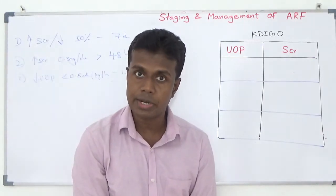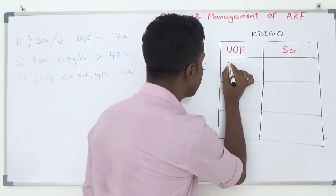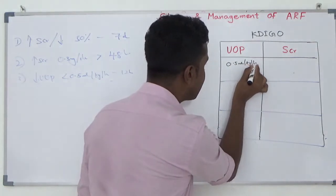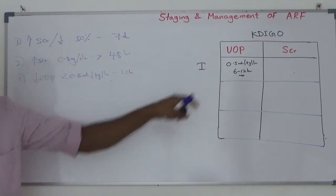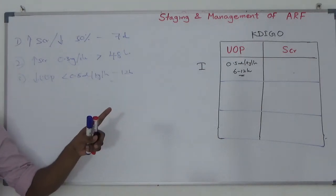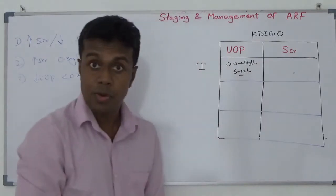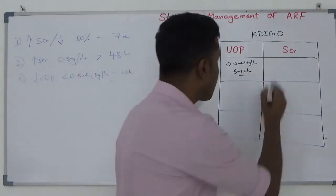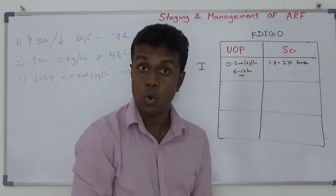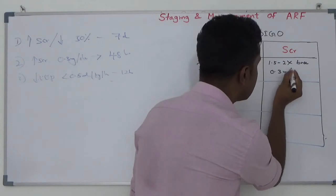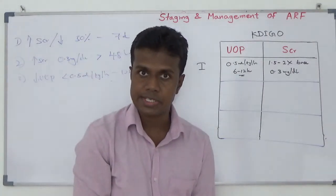Stage 1: if urine output is less than 0.5 ml per kg per hour for 6 to 12 hours, you can label your patient as having acute renal failure Stage 1. When it comes to serum creatinine criteria, 1.5 to 2 times elevation of baseline serum creatinine, or a rise of 0.3 mg per deciliter from baseline value — your patient is Stage 1 acute renal failure.